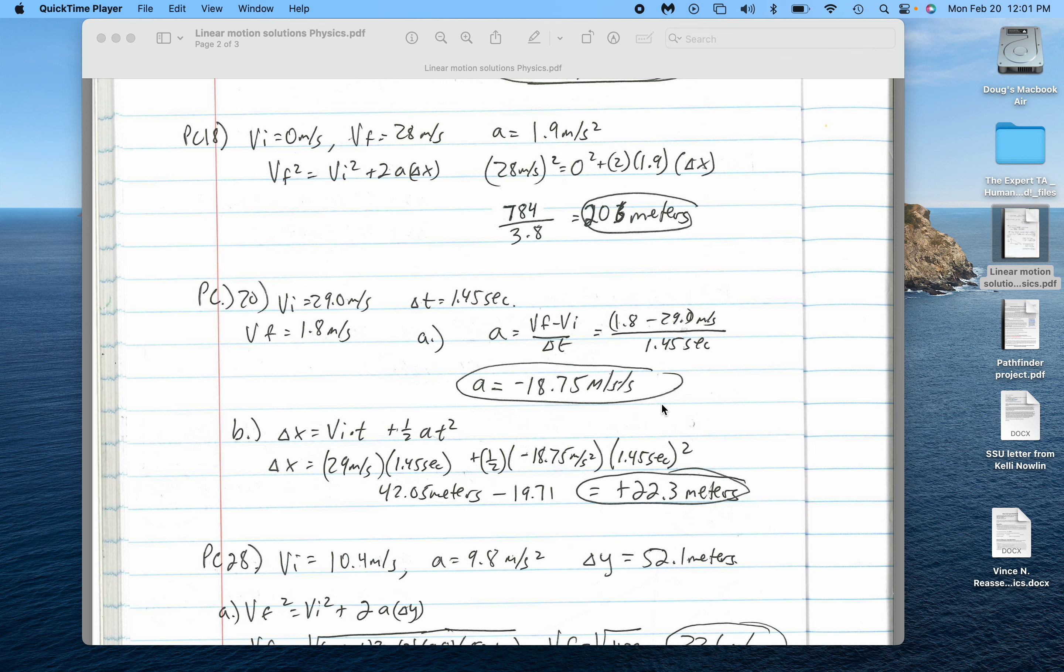To find the acceleration, VF minus VI over T, negative 18.75 meters per second squared.